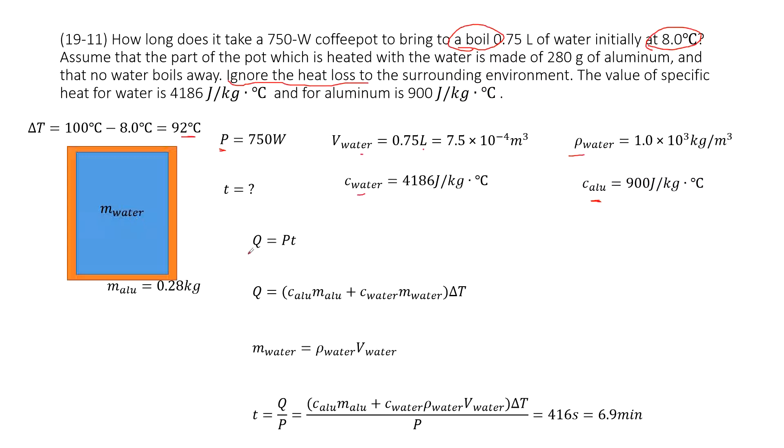So we can see the first energy is heat. So this one, the heat absorbed by the water equals power times T. Now this heat is by the water part and by the aluminum part.